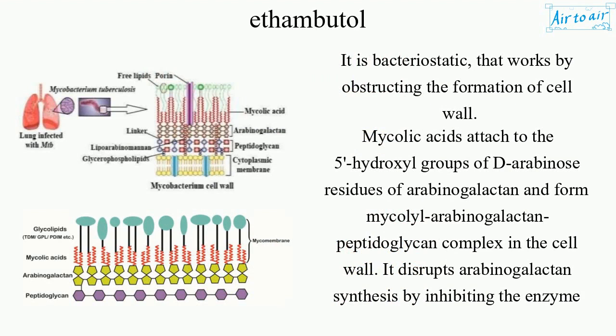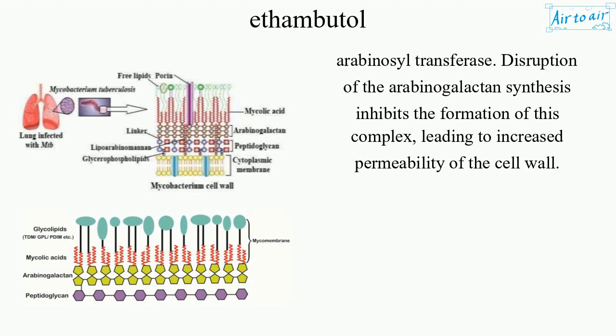Mycolic acids attach to the hydroxyl groups of D-arabinose residues of arabinogalactan and form a mycolyl-arabinogalactan peptidoglycan complex in the cell wall. It disrupts arabinogalactan synthesis by inhibiting the enzyme arabinosyl transferase.